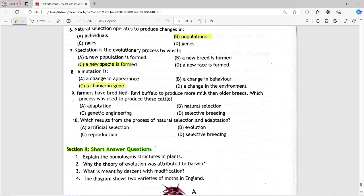Next MCQ is Farmers have bred Nili Ravi Buffalo to produce more milk than older breeds. Which process was used to produce these cattle? Options are: adaptation, natural selection, genetic engineering, selective breeding. Answer is option D, selective breeding.